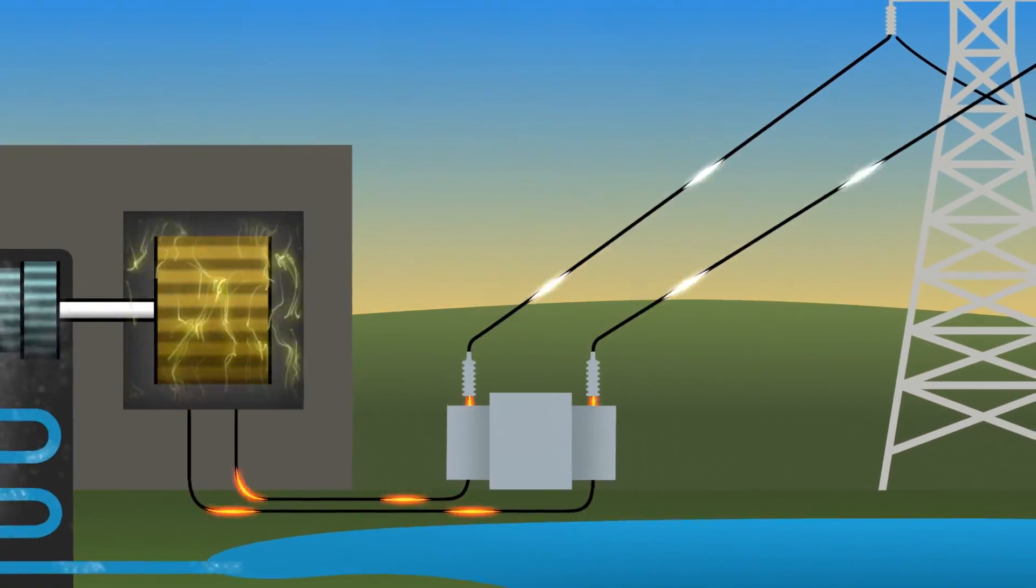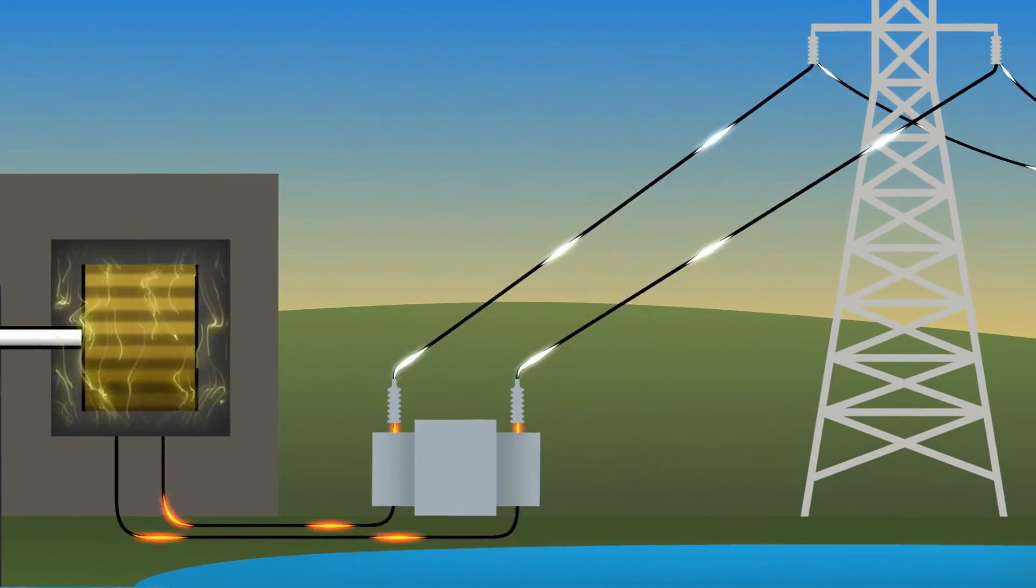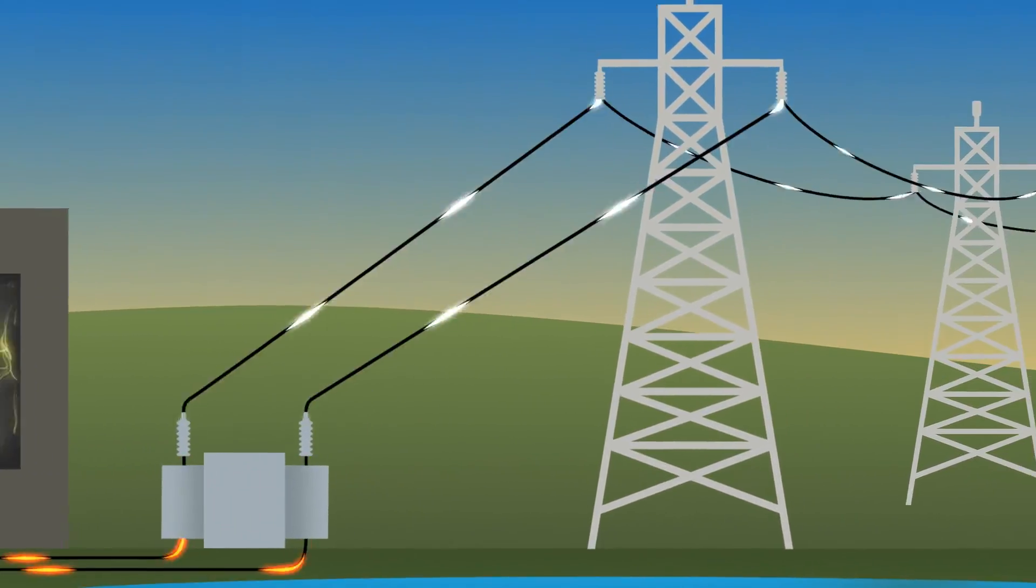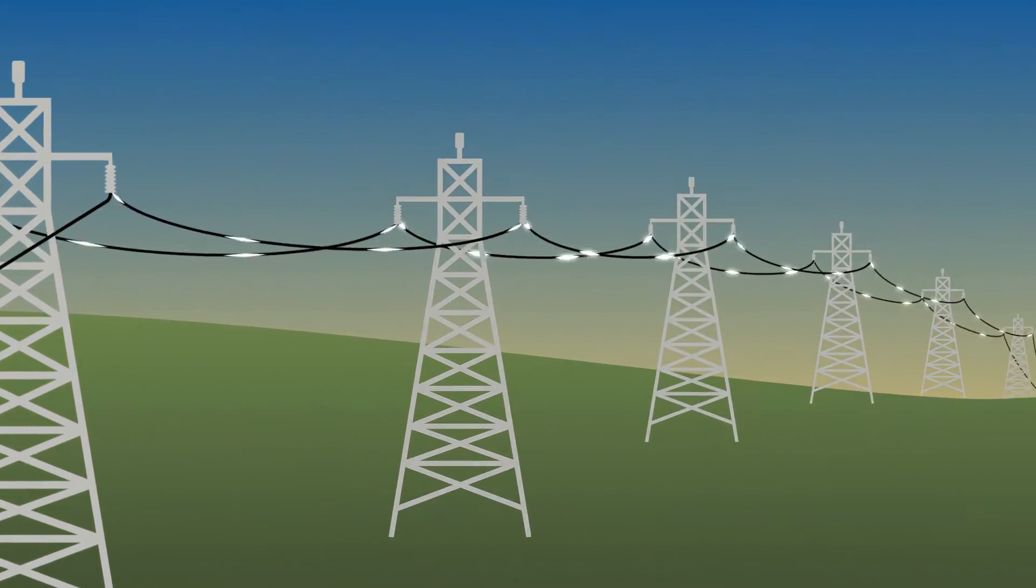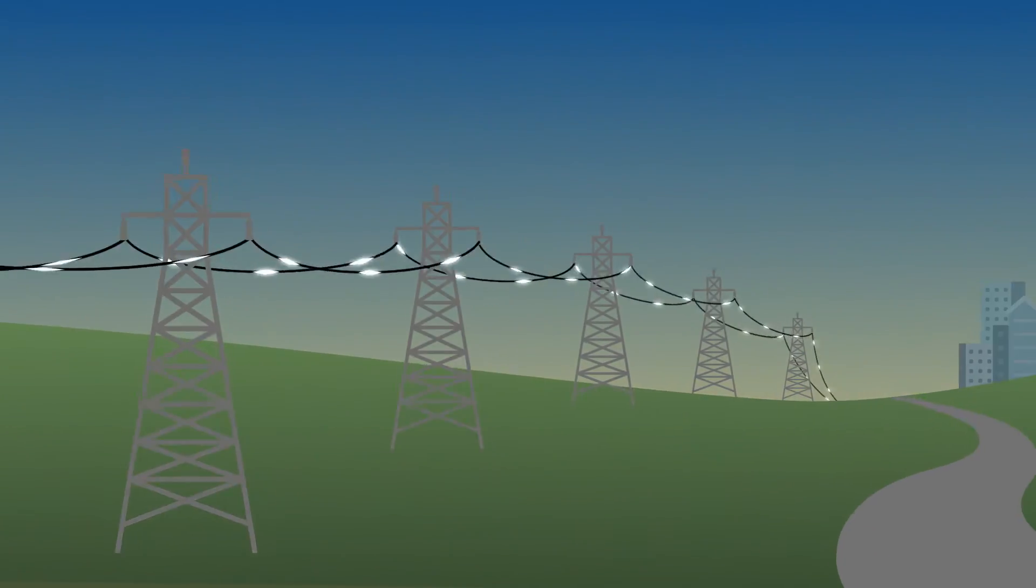Before heading on its way, the electricity is boosted with step-up transformers to a very high voltage. Then, it travels great distances on transmission lines held up by tall metal towers.